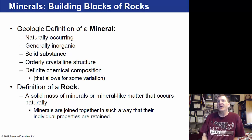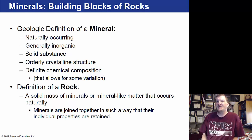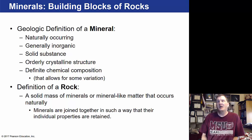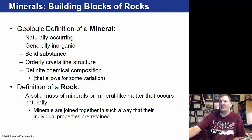A mineral also has a definite chemical composition. A mineral is different from a rock — a rock is a solid mass of minerals or mineral-like matter that occurs naturally, with minerals joined together.